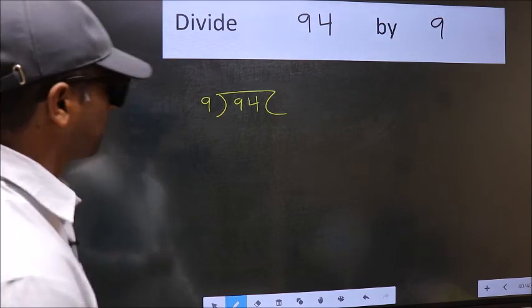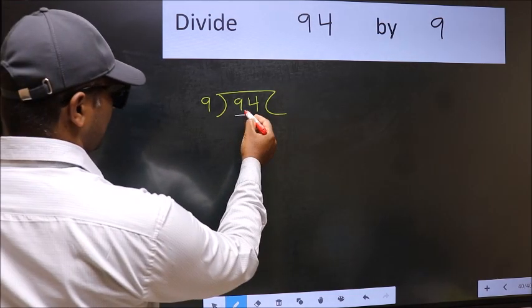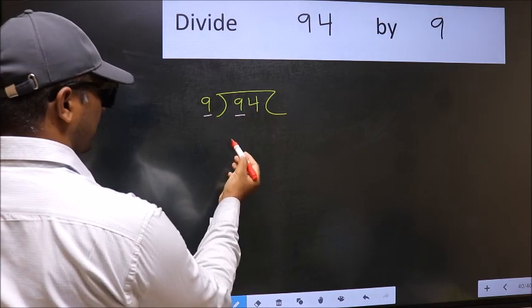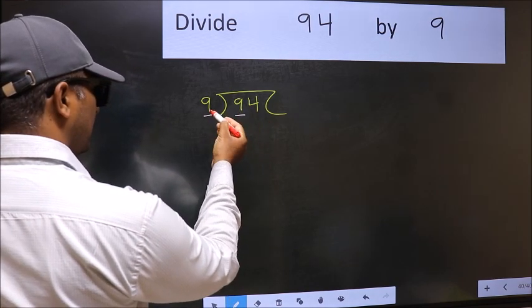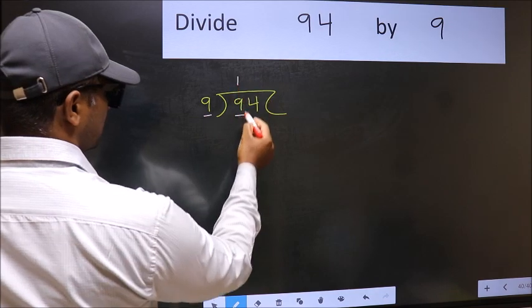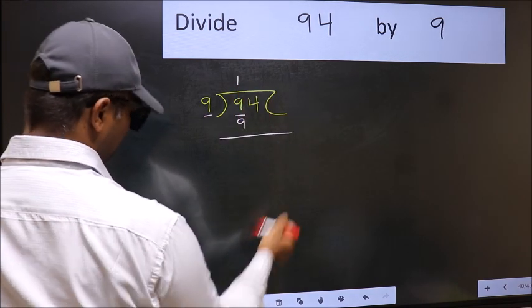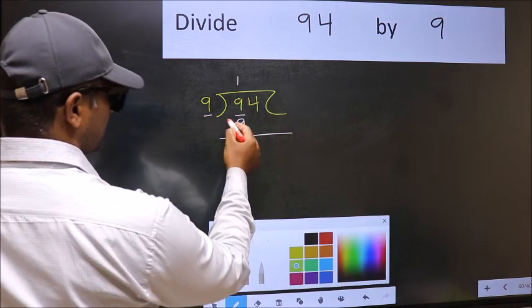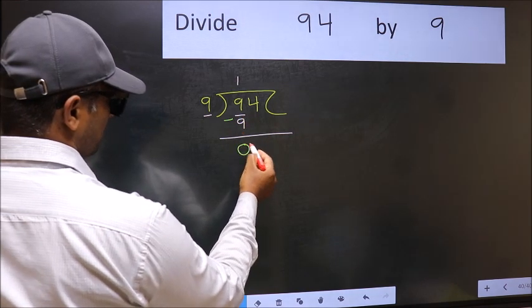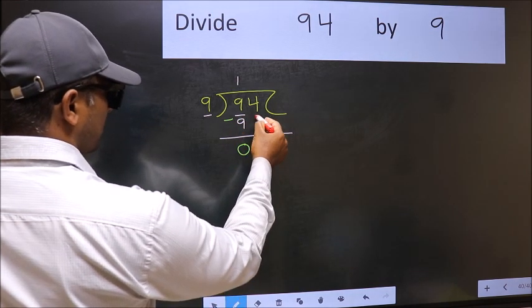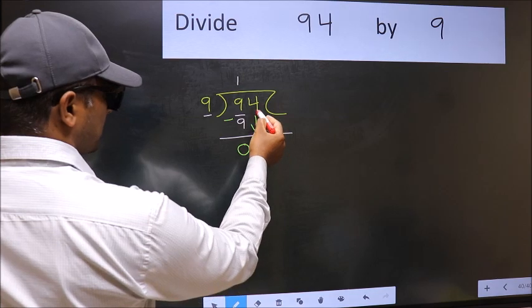Next. Here we have 9 and here also 9. When do we get 9 in 9 table? 9 once 9. Now you should subtract. 9 minus 9, 0. After this, bring down the beside number. So 4 down.